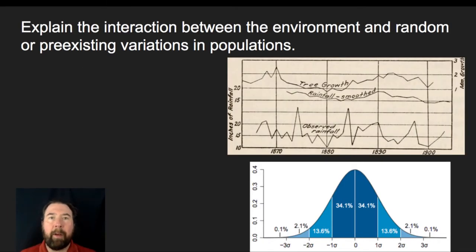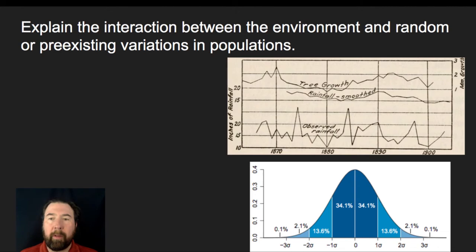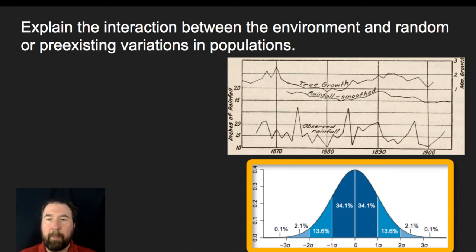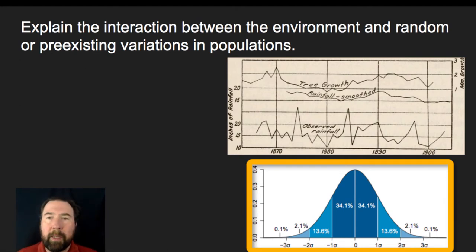I'm going to explain the interactions between the environment and random or pre-existing variations in a population. First off, it's important to note that all populations have variation, so in every single population you look at you're going to see that for certain traits there's going to be ranges of phenotypes for any of the polygenic characteristics. There'll also be variation in Mendelian traits, but those tend not to have the same broad swath of variation.